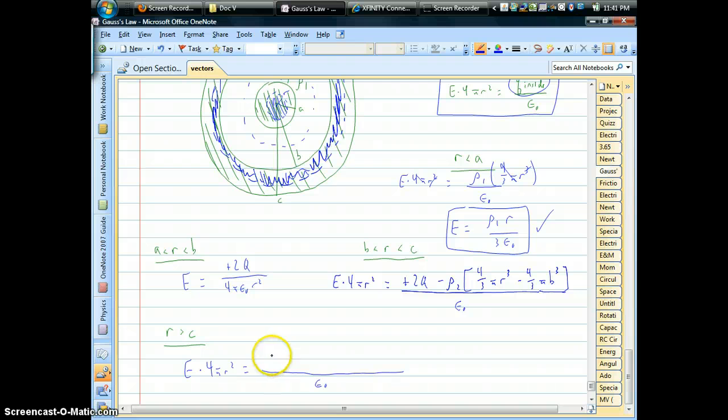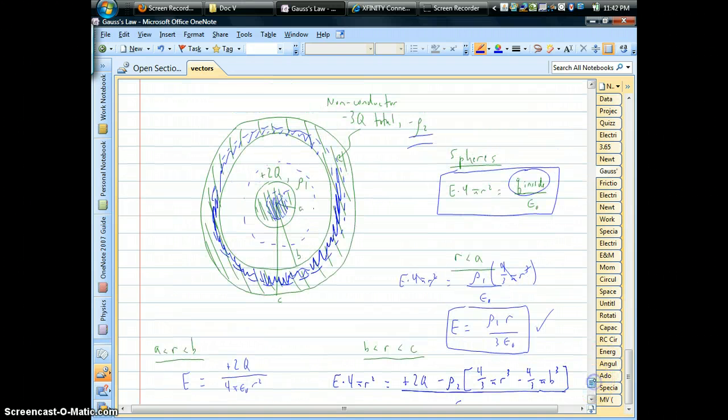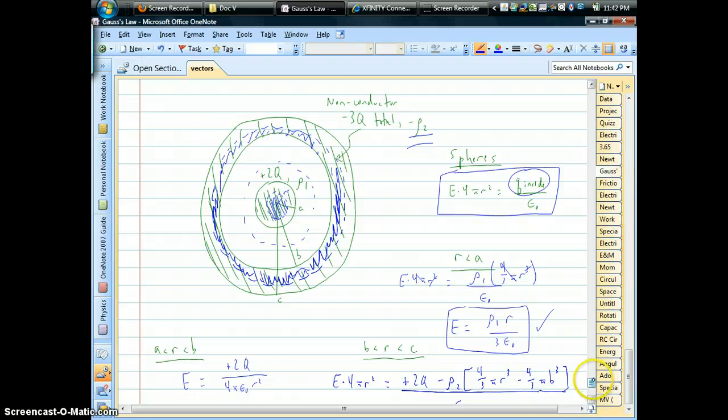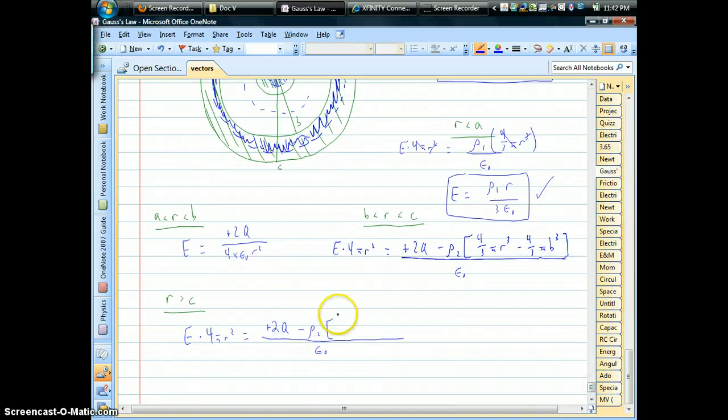If we're outside, we've got that inner ball. So plus 2q. Well, now we're going to have this rho 2 multiplied by the total volume of the shell. It would look almost identical to what we just wrote. Only this time we'd have 4/3 π c cubed. That's the total volume all the way out to the surface, the outer surface. But we have to subtract out the hollow part where there isn't any of this material.